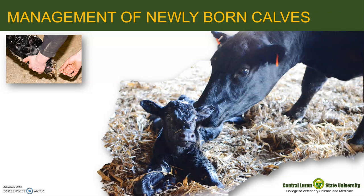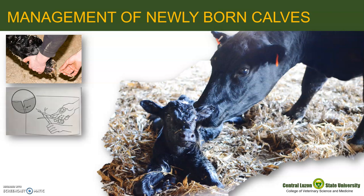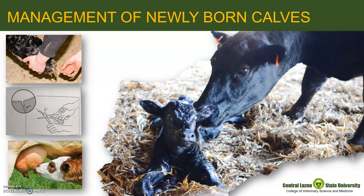Or lay the calf on its side and apply compression on the rib cage. Tie the navel cord about 3 cm away from the body and cut off the navel 1 to 2 cm below the tied portion. The cut navel should be soaked in a tincture of iodine to avoid infection. Calves should suckle colostrum milk from their mother within 3 hours after calving. A calf that has not suckled 5 to 6 hours after calving should be led to the dam's udder. Orphan calves should be raised on cow's milk or milk replacer.